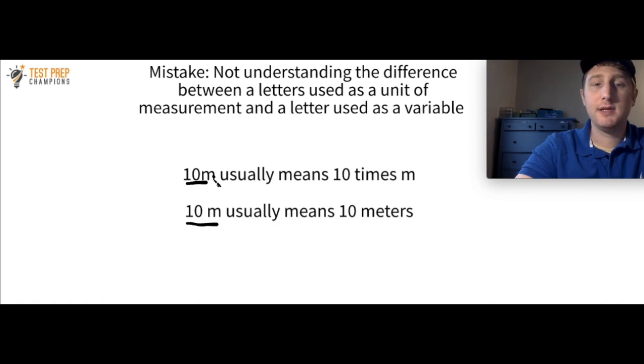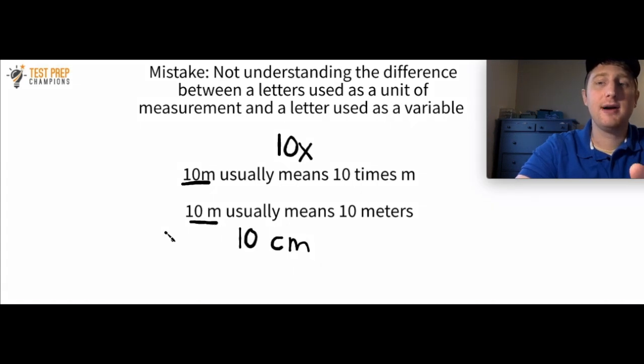When really typically 10 with the M right next to it like this usually is going to mean 10 times M. Just like if you saw something like 10X, that would be the same as 10 times X. Now, if you see 10M written like this, that's probably going to mean meters. And also keep the context in mind. If the question is discussing distance or something like that, if you see an M, that's probably going to be meters.